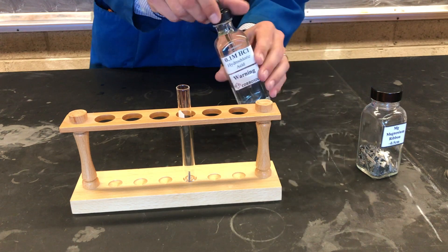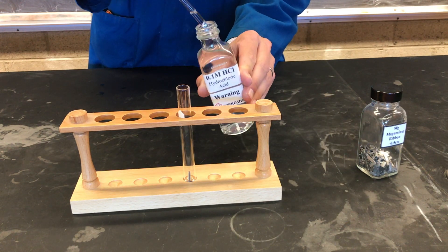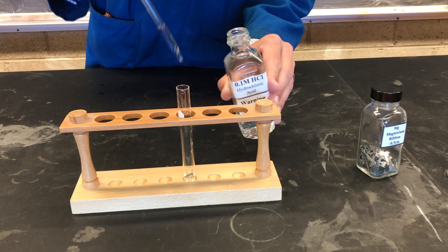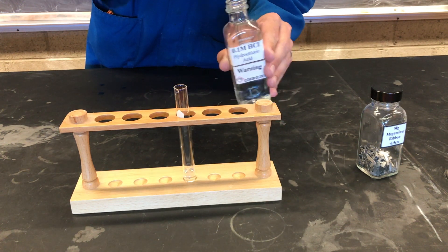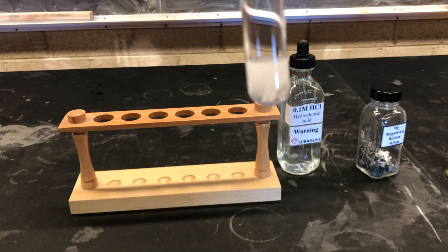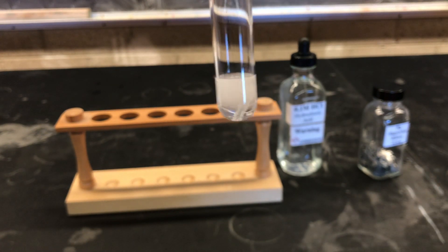We'll add about 20 drops of the acid solution to our test tube. We can note the gas being evolved and make our observations. Properly dispose of waste in the labeled container and clean your glassware.